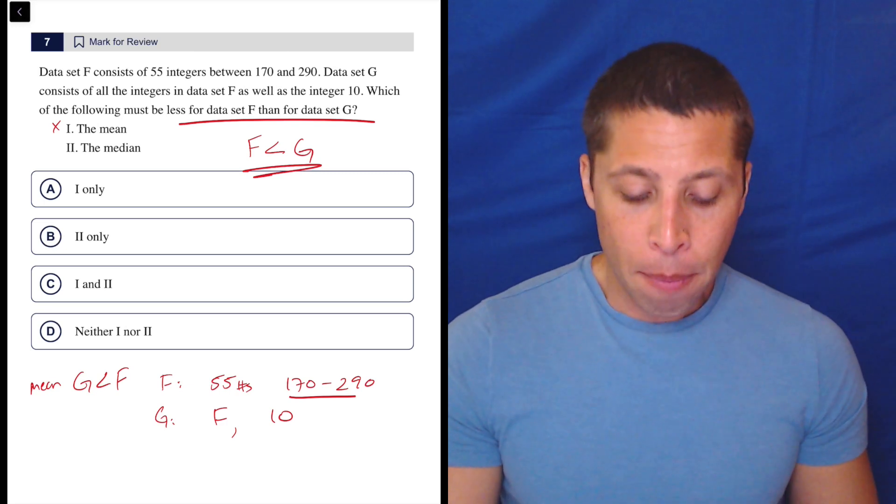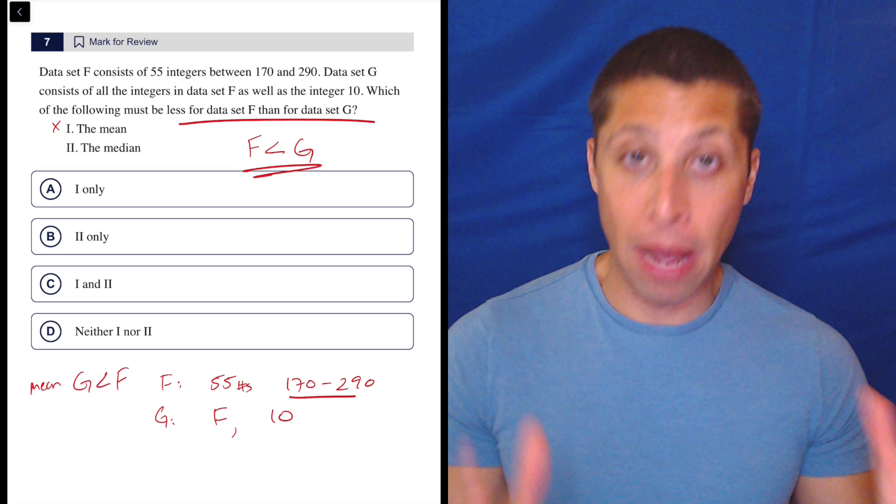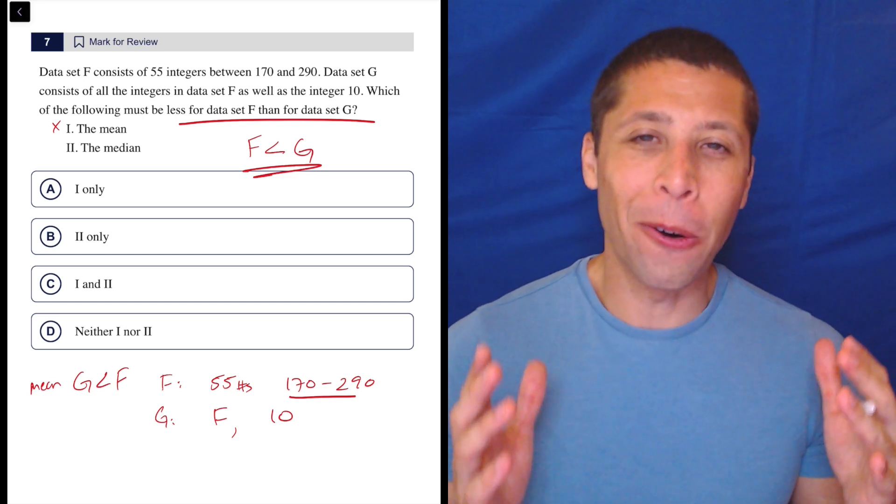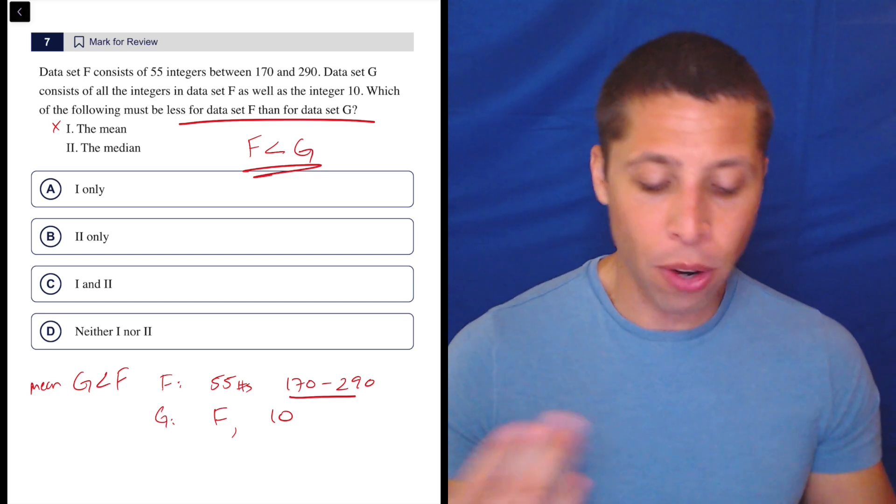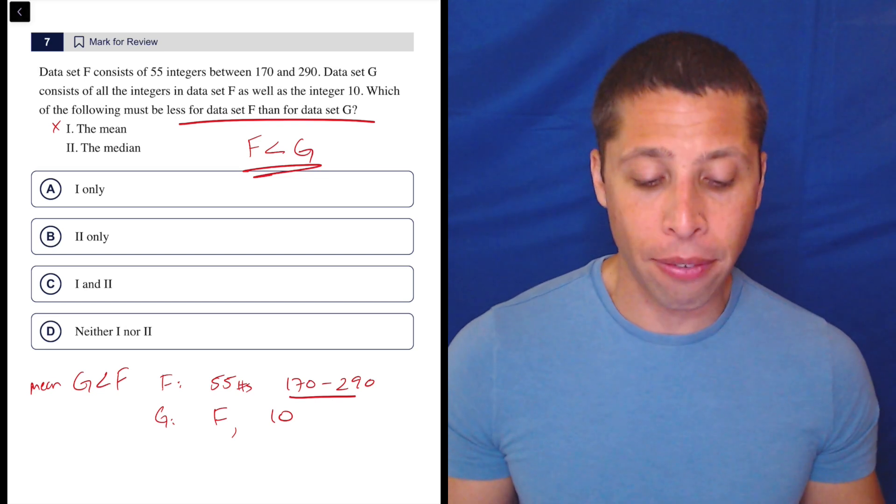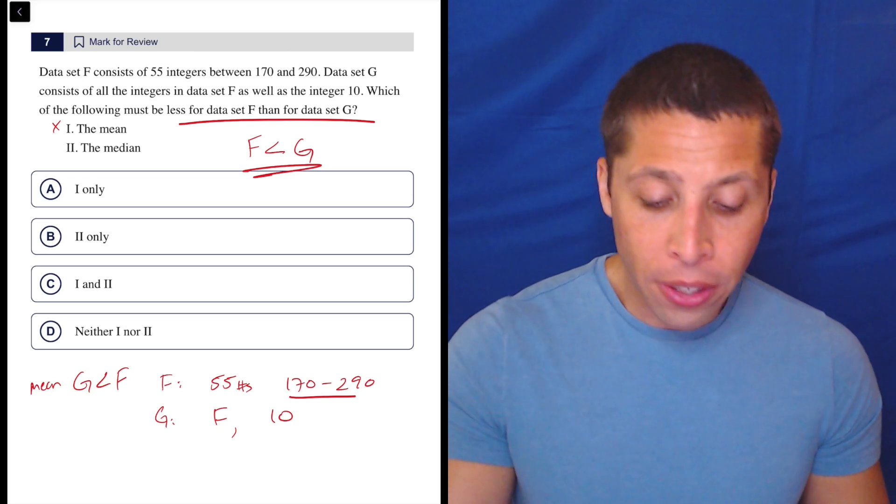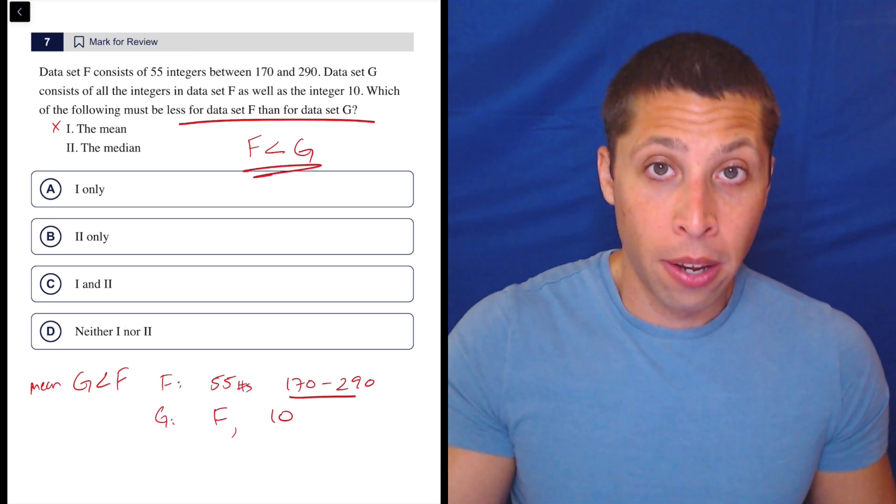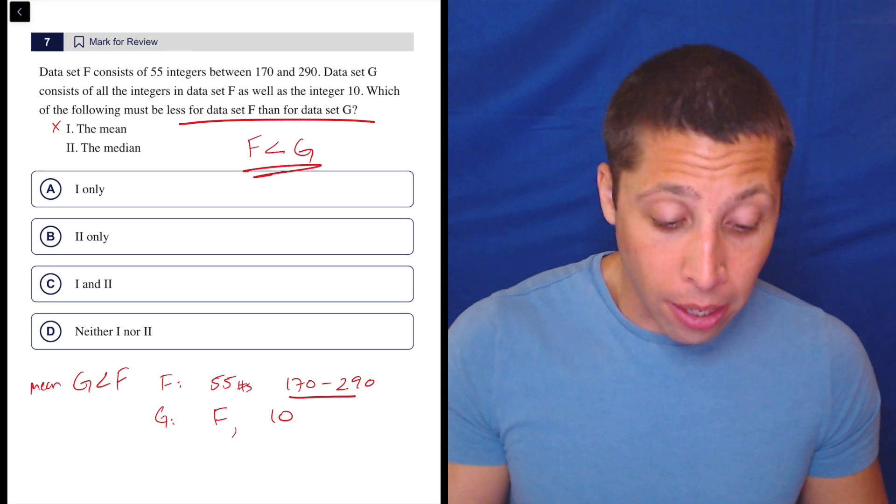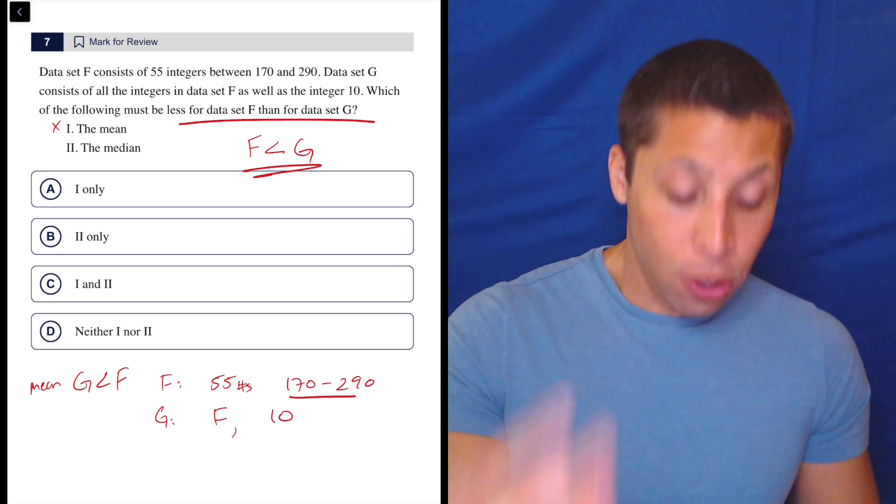Now remember the median. Median is the absolute middle. So we don't really know what's going on because I don't know what the numbers are in dataset F. It could be that all the numbers in dataset F are, I don't know, 200. It doesn't say they have to be different, I don't think.